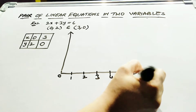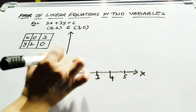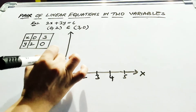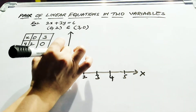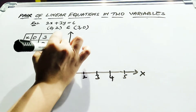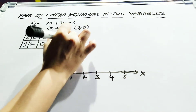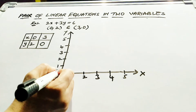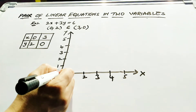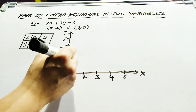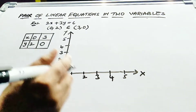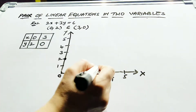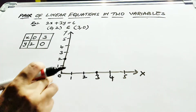This is your x-axis: 1, 2, 3, 4, 5, and similarly for your y-axis. When your x is 0, y will be 2. When your x is 3, y is 0.